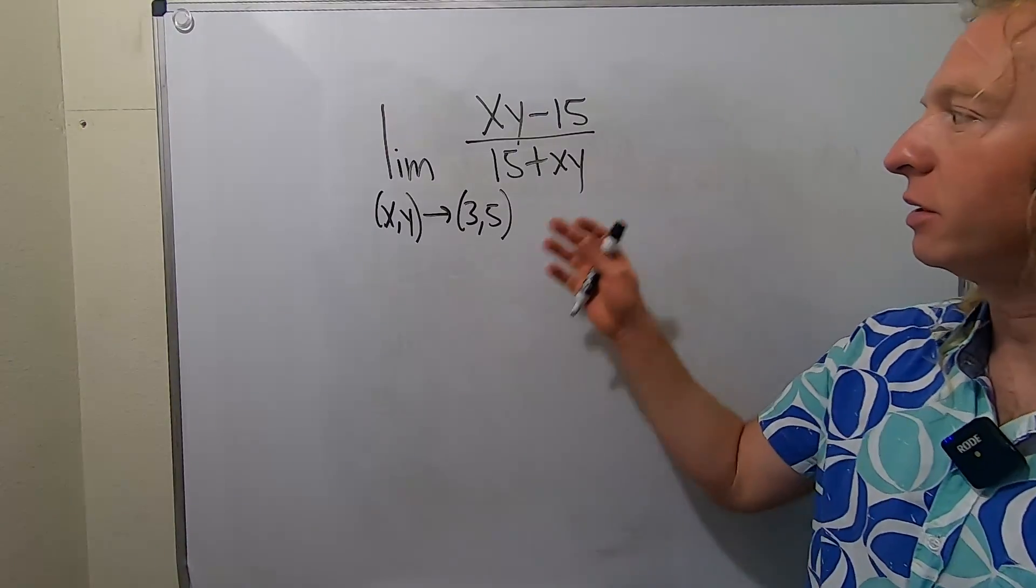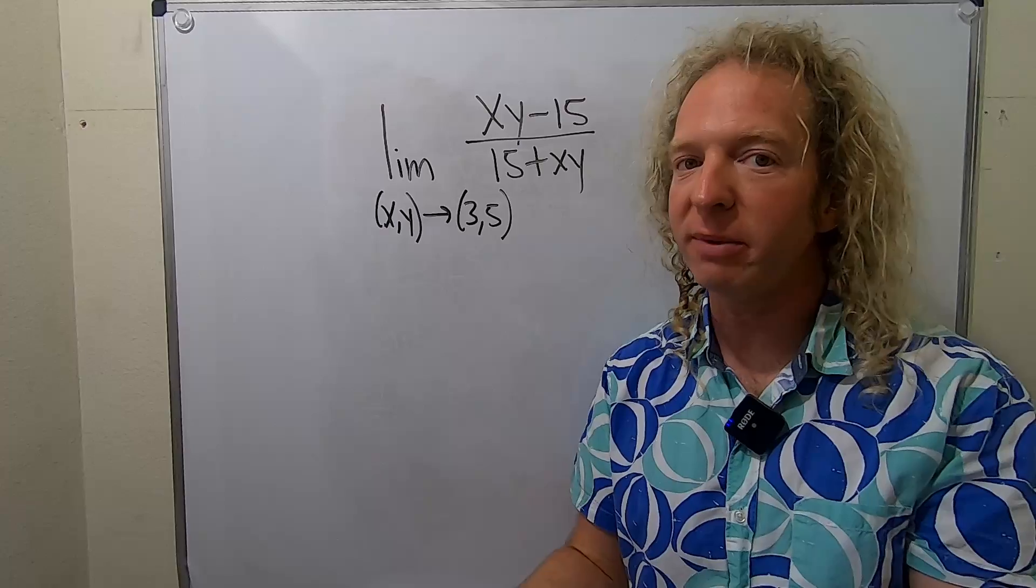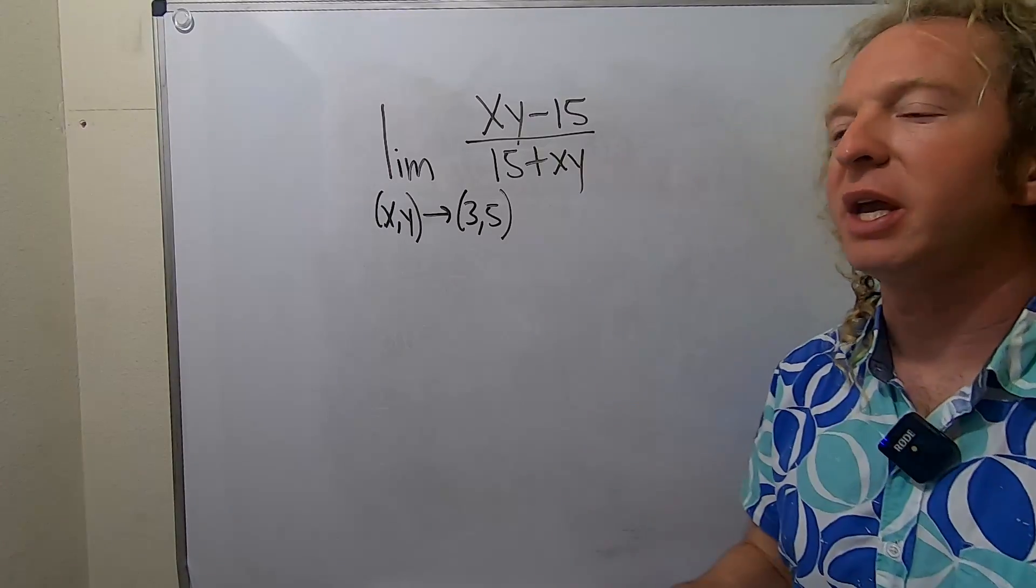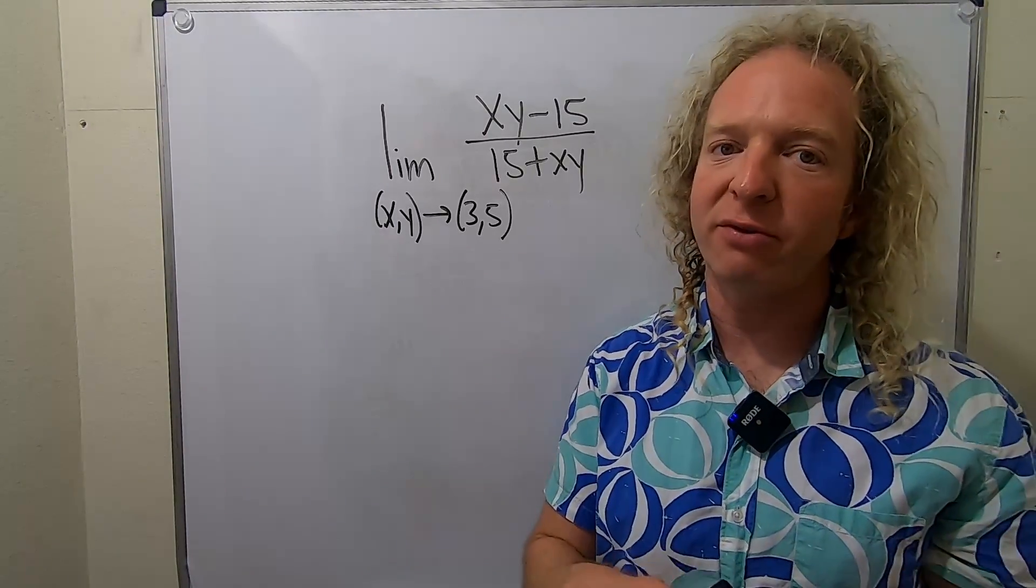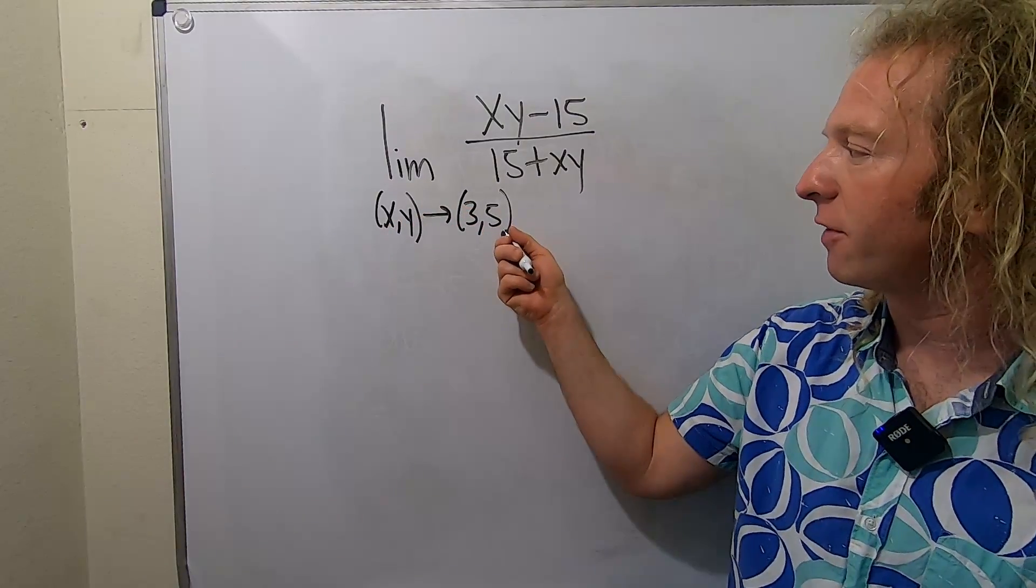In this video we're going to evaluate this limit. Just like when you have a single variable, if you can take the numbers and plug them in and you get an answer, that's the answer. If you don't get an answer, then you have to do something else. Here x,y is approaching (3,5), so the question is what happens to this function when x,y gets close to this ordered pair.